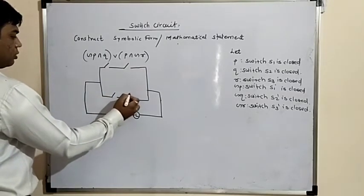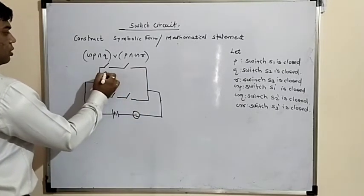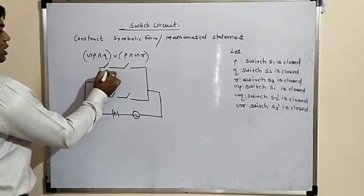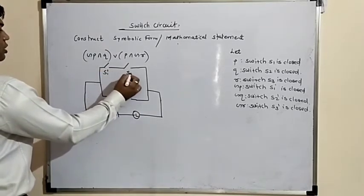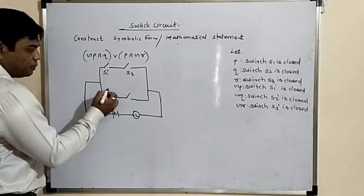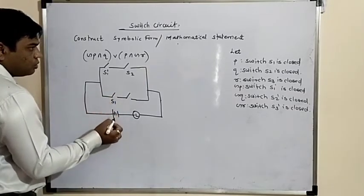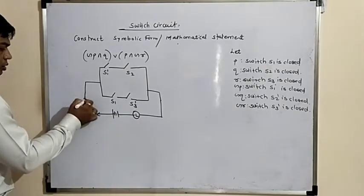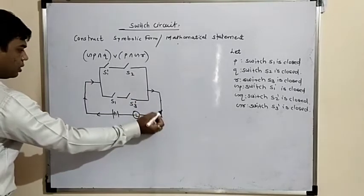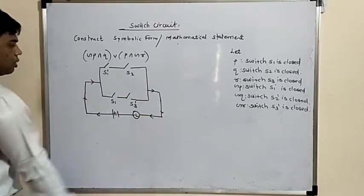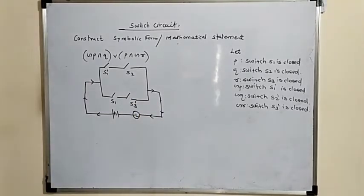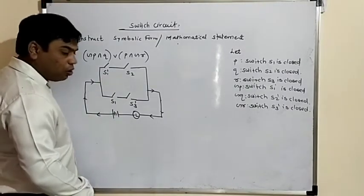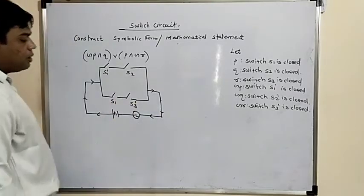Negation P is S1 dash, Q is S2, P is S1, and negation R is S3 dash. In this way the circuit will have current flow. You can also draw the statement pattern to check it.